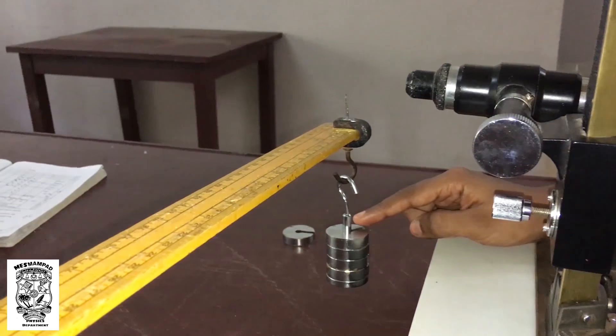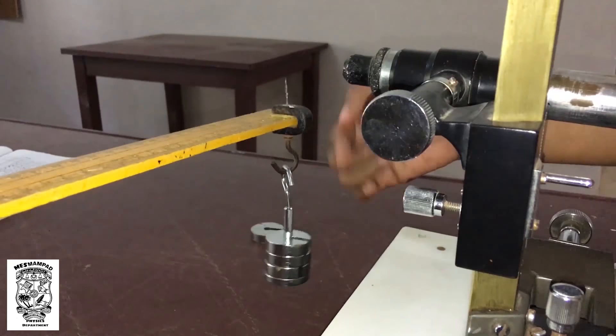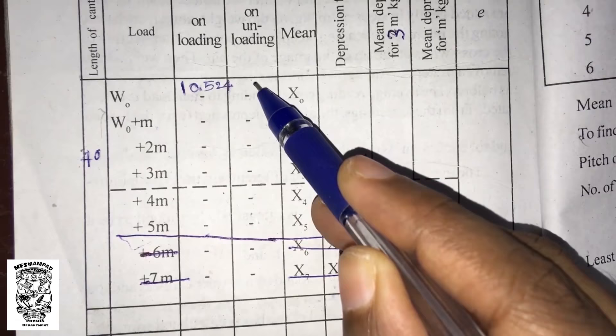Now, we will take the reading for W0 plus 4M. Using the traveling microscope needle focus with main scale reading and vernier scale reading. We will record the reading for W0 plus 3M and repeat the readings during unloading.